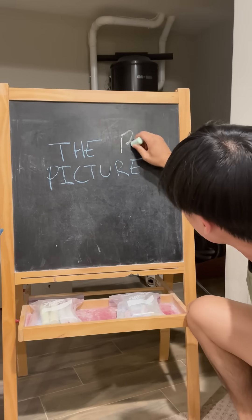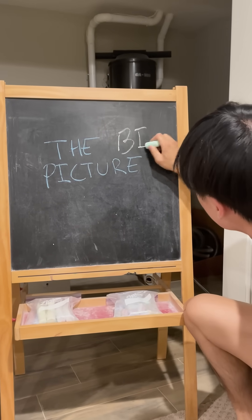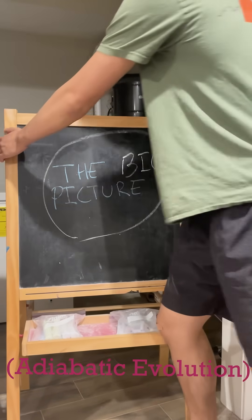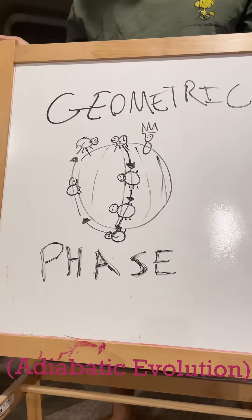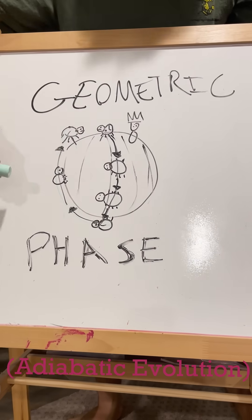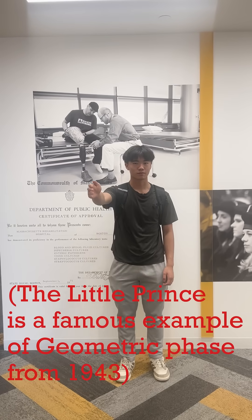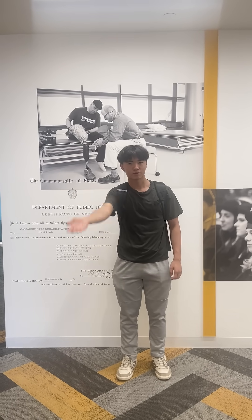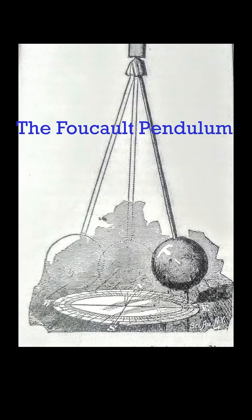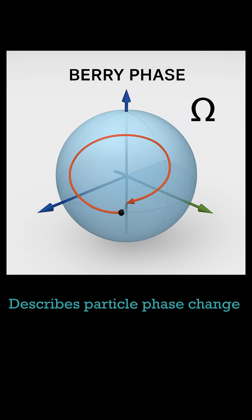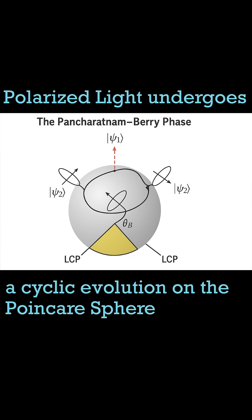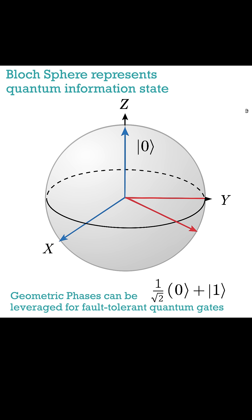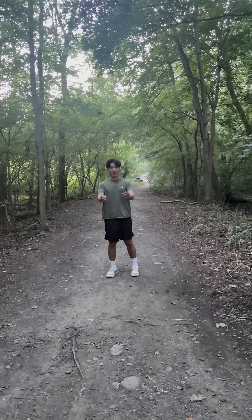Looking at the big picture, we can use this idea of geometric phase to illustrate how a system changes even after coming back to its starting point, based on what path it took to get there. Even though it might just seem like a TikTok trend, this is a great example of a concept crucial to our understanding of how things like gyroscopes and optics, and even quantum mechanics and quantum computers work. Pretty cool, right?